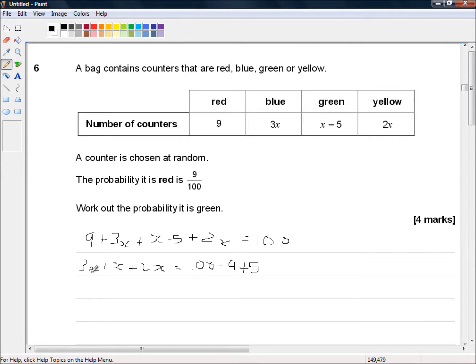So combining the like terms. 3x plus x is 4x plus 2x is 6x. 100 minus 9 is 91 plus 5 is 96.